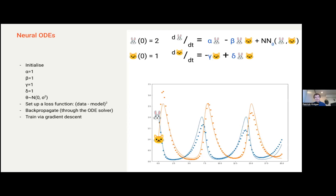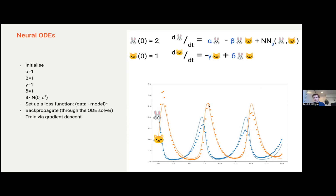When I go ahead and run this, I do basically the exact same thing. I say theta, sampled from some normal distribution — this is a vector of parameters inside my neural network. I initialize this and do the exact same thing as before: set up a loss function, backpropagate, and train via gradient descent. And ta-da — I've now got a much better model. Notice how in my previous model all the peaks were the same height, because that's how my theoretical model was set up. But my neural network model is starting to better fit the data because it has extra flexibility to capture more complicated dynamics — you can see some kind of decaying behavior emerging.